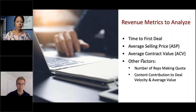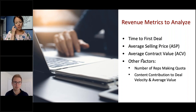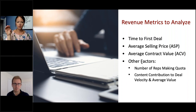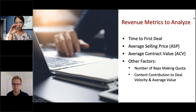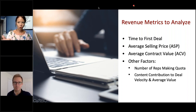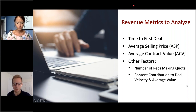In terms of metrics to analyze: time to first deal, average selling price, how many reps are making quota, and content contribution to deal velocity and average deal value. If you can start wrapping your head around how these factors are changing over time and tying them back to training initiatives, you'll have tangible data to present when justifying or revising your enablement investments. Charlene adds: a lot of organizations look at the middle of their sales organization — not highest or lowest performers — and try to determine if targeted training can bump that middle tier up into higher performance.